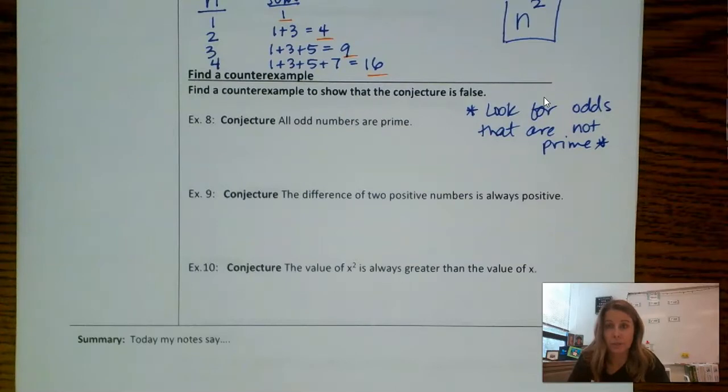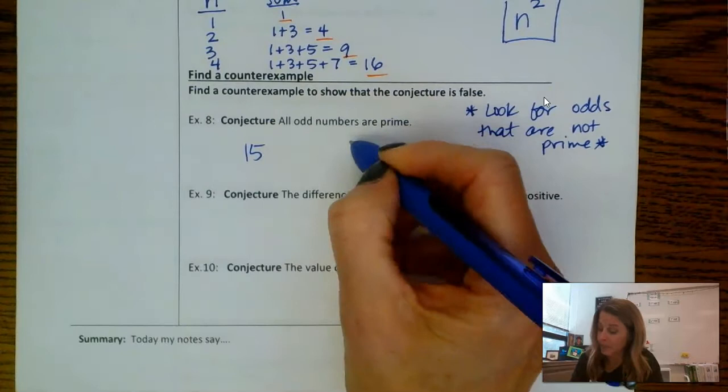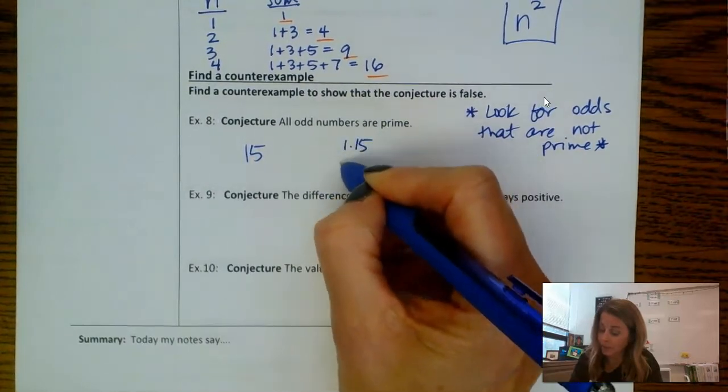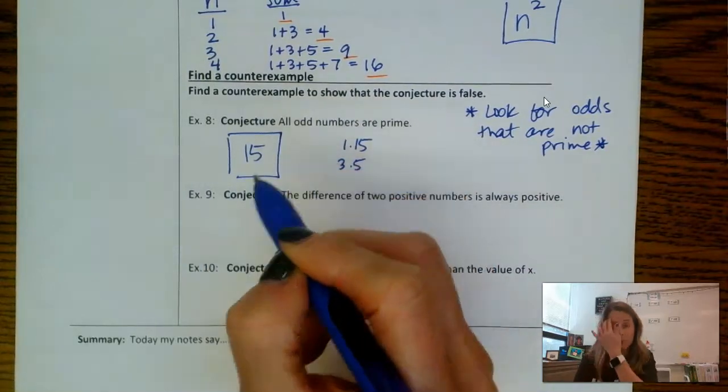Let's see, there's a lot of examples. First one that comes to mind: 3 is not prime, 15 is not prime, that type of thing. So I'm going to just say 15, and I might even show that, you know, 1 times 15, 3 times 5, that sort of supports that.